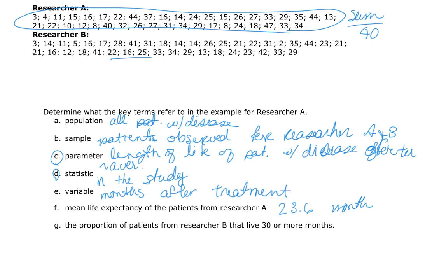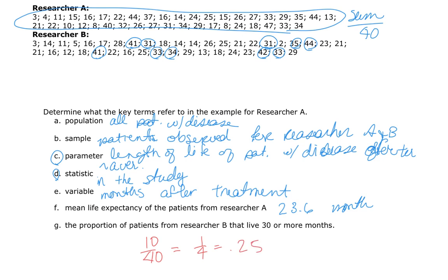For the proportion of patients from researcher B that lived 30 months or longer, I go through the data and circle anything 30 months or greater. Counting them up: one, two, three, four, five, six, seven, eight, nine — and after rechecking I found one more, making it 10. There are 40 patients total, so 10 out of 40 is one fourth, or 0.25. So one fourth of the patients in researcher B lived 30 months or longer. That's it for this video.